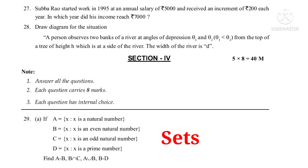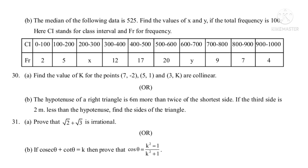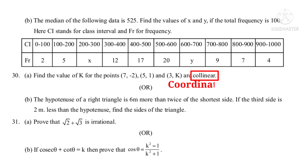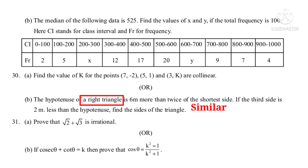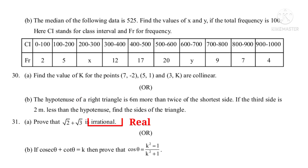Question 29B: The median of the following data is 525. Find the values of X and Y if the total frequency is 100 — from Statistics. Question 30A: Find the value of K for which the points (7, −2), (5, 1), and (3, K) are collinear — from Coordinate Geometry. Question 30B: The hypotenuse of a right triangle is 6 meters more than twice the shortest side. If the third side is 2 meters less than the hypotenuse, find the sides of the triangle — from Similar Triangles. Question 31A: Prove that √2 + √3 is irrational — from Real Numbers.